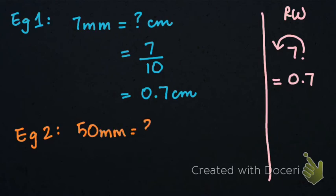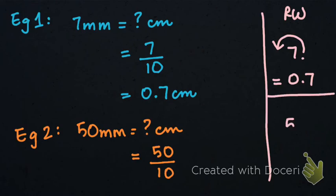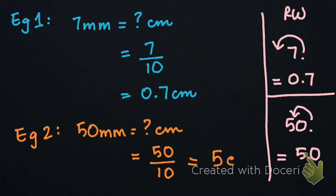Let's do another example. We have 50 millimeters and need to find how many centimeters that is. We divide 50 by 10. The decimal is at the end of 50; we shift it one place to the left, giving us 5.0. So our answer is 5 centimeters — we can write it as 5.0 or simply 5 centimeters.